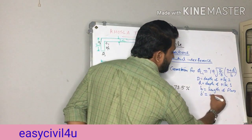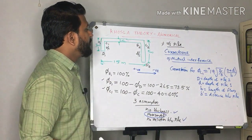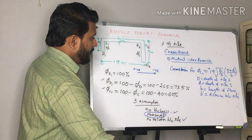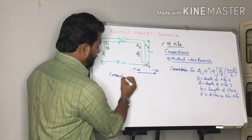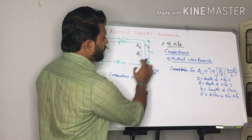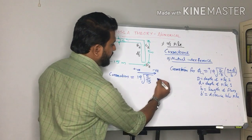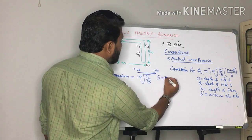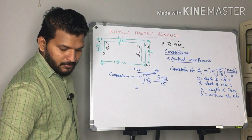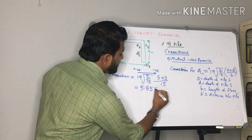In this particular problem, the two piles are at the upstream and downstream ends of the floor. Therefore, B-dash (the distance between the piles) is equal to B, the total floor length of 15 meters. After substituting the values into the mutual interference correction formula, the result is 5.85%. This correction is positive.